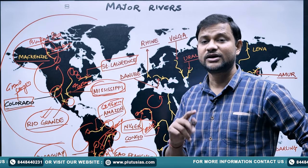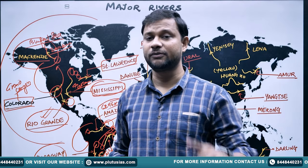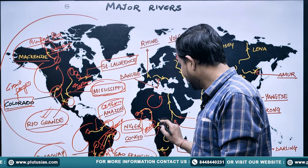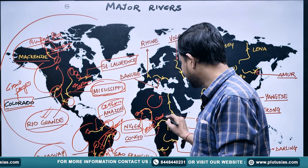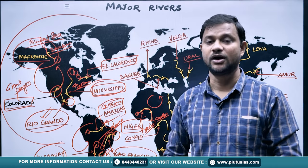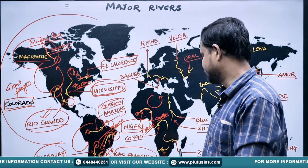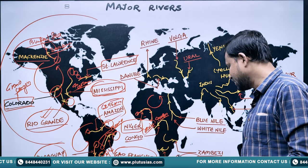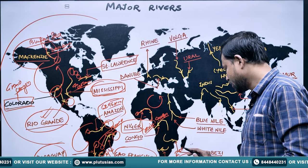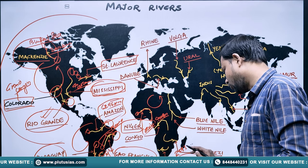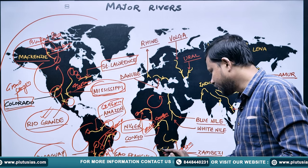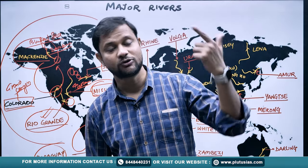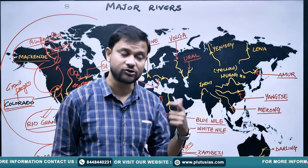The Congo River, also known as the Zaire River, is very unique because it cuts the equator twice. Its length is almost 4,000 kilometers. Next is the Orange River, with a length of approximately 2,300 kilometers, draining into the Atlantic Ocean. Remember where the Orange River drains — it has been a probable question in past exams.